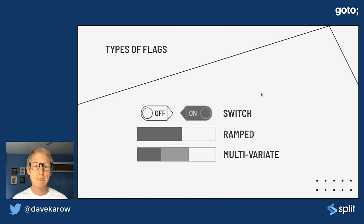Typical types would be a simple switch that just turns a feature on and off. They can be used to ramp up to a randomized population. And they can also be used to do multivariate experiments where you're trying several variations of something like different backend search algorithms.